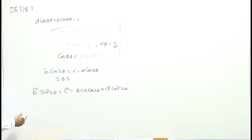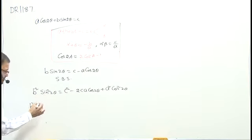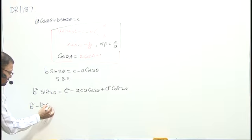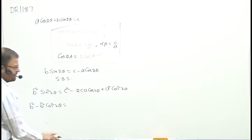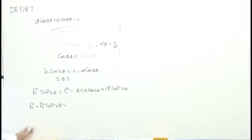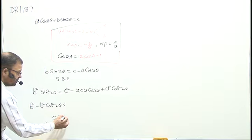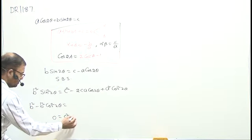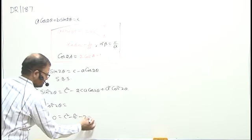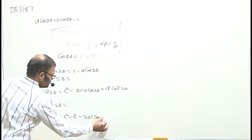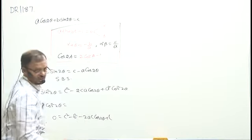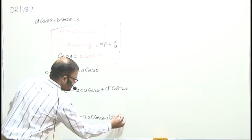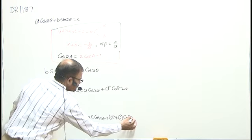On the left side, I write 1 minus cos²2θ, so b²(1 minus cos²2θ), that is b²·cos²2θ, equals that expression. Now, pushing everything to the right side: 0 equals c² minus 2ac·cos2θ, this minus b² goes to plus, plus a², giving (a² + b²)·cos²2θ.